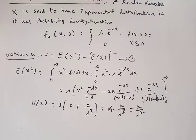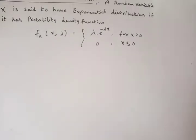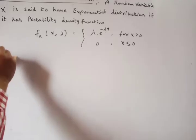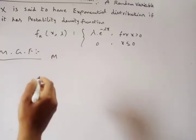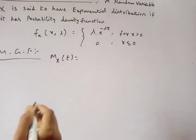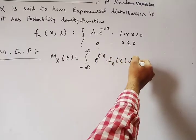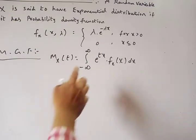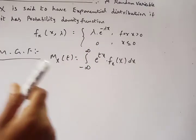We have completed the mean and variance of exponential distribution. Next we will see the MGF of exponential distribution. The general definition for MGF is: M_X(t) = integral from −∞ to ∞ of e^(tx) · f(x) dx for a continuous random variable, or summation of e^(tx) · P(x) for a discrete random variable.